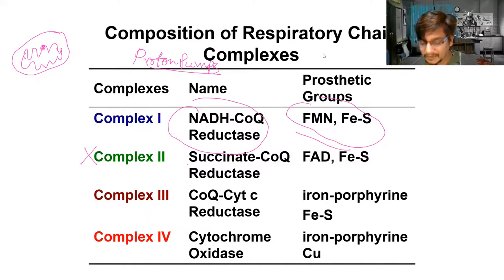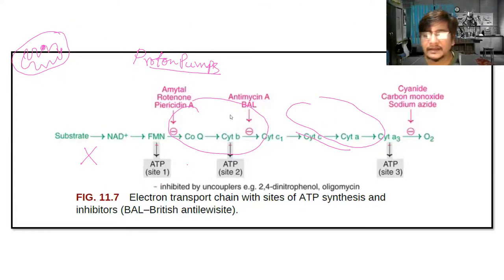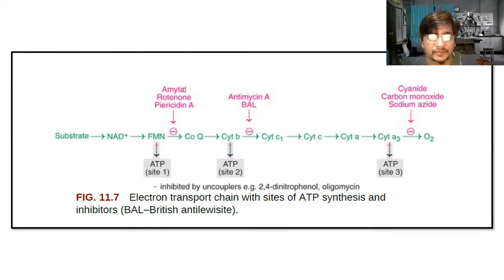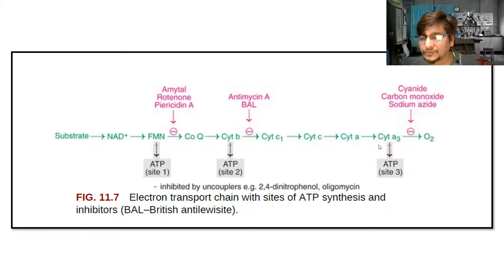Certain chemicals can block the electron transport chain. Amytal, rotenone, and piericidin A work at Complex I. Antimycin A works between cytochrome b and cytochrome c, which is part of Complex III. Cyanide, carbon monoxide, and sodium azide work at the last step, Complex IV, where the electron is transferred to oxygen.